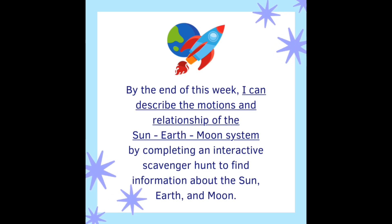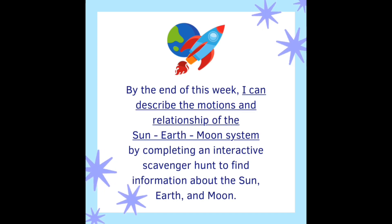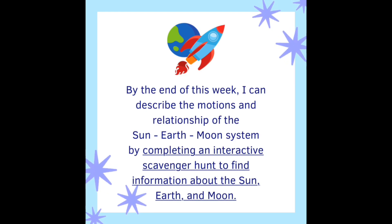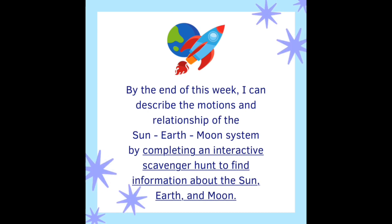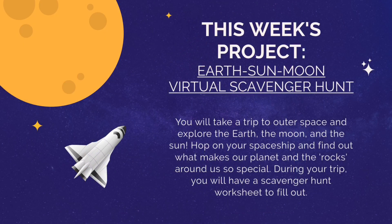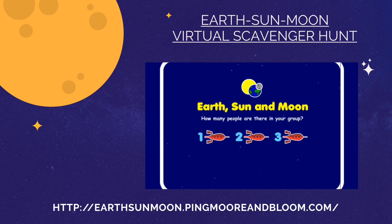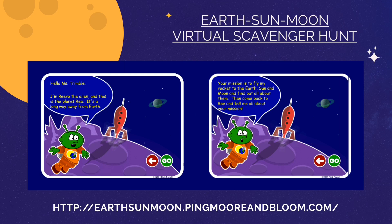By now you should be able to describe the motions and relationship of the sun, earth, and moon system. For your project this week, you'll be completing an interactive scavenger hunt to find more information about the sun, earth, and moon on a website. You'll be taking a trip to outer space and exploring the earth, the moon, and the sun online. When you go to the website earthsunmoon.pingmoreandbloom.com, you'll select how many people are in your group — you should be doing this alone, so select one. Then you'll meet an alien named Revo who is very friendly and will guide you through with directions.